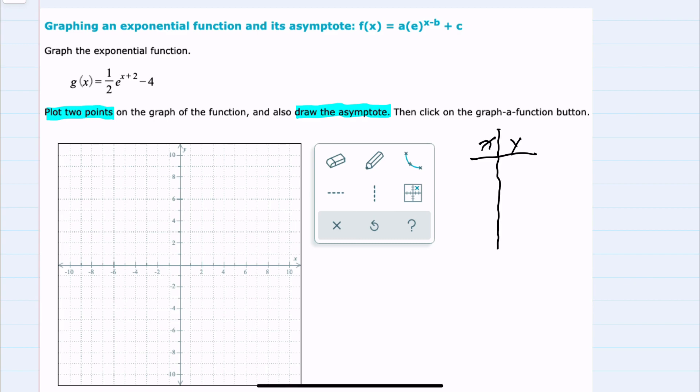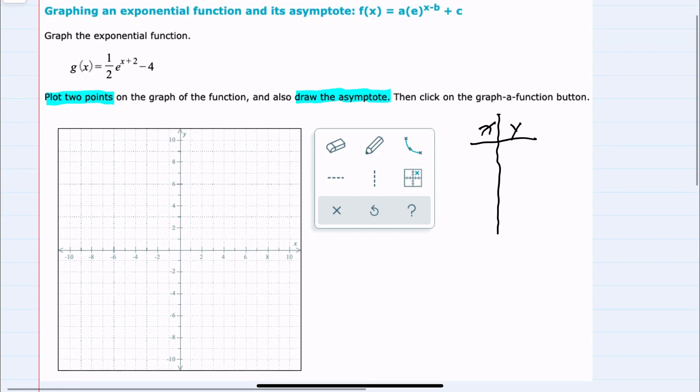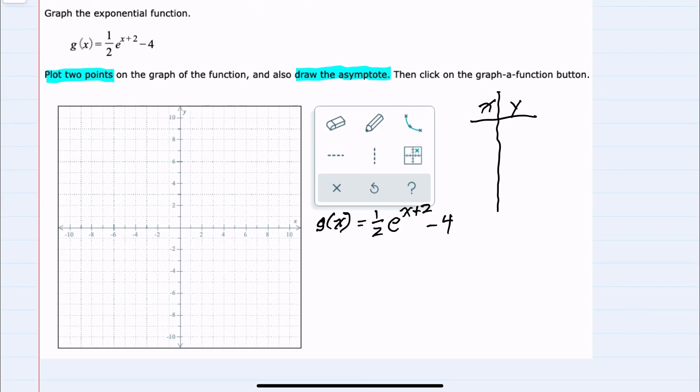Since we can choose any two points for our function g(x), we can choose a friendly number. I know that when this exponent x+2 is zero, then e^0 will be one. So I can intentionally choose a value for x of negative two so that e will be raised to the zero power.